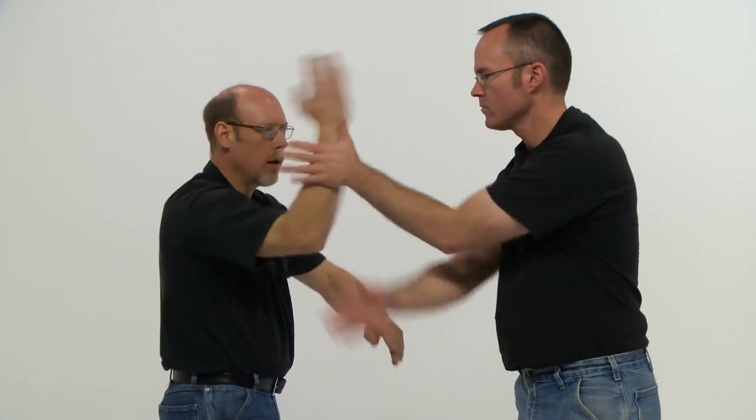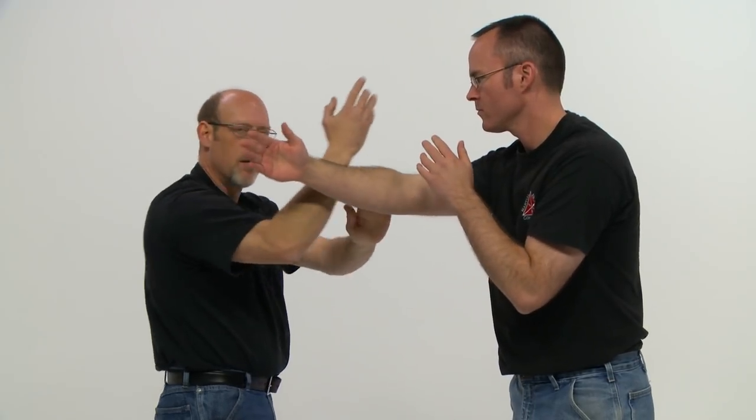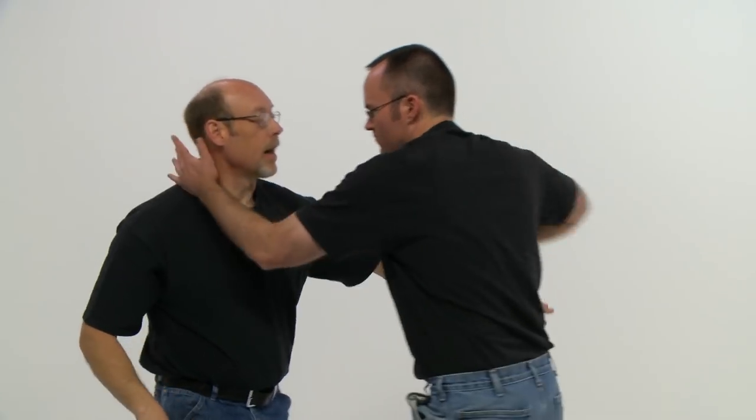The real operative part of this is this wedging action right here. This is what's really going to save you because that is the structure. This is the speed, this is the structure that you want. We don't like blocking this way with the initial hand. If Vince is striking down and I block here, he's smart enough to simply yank that out of the way and go to work. It's not going to do me much good.